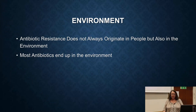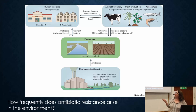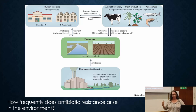Then we have the environment. Joachim Mowry talked about this a lot — we need to know how frequently antibiotic resistance is occurring in the environment and how to prevent it. This slide summarizes that you have sources of antibiotics coming from hospitals and people, as well as agriculture and pharmaceutical plants, all leading to resistance to some degree, though we don't know well how much.